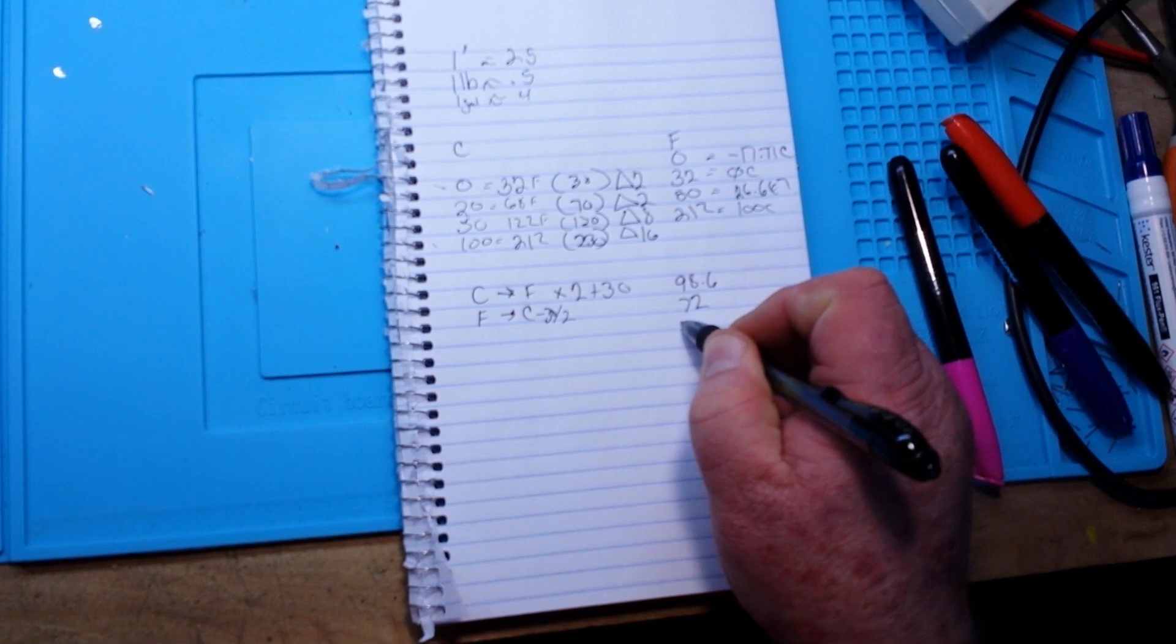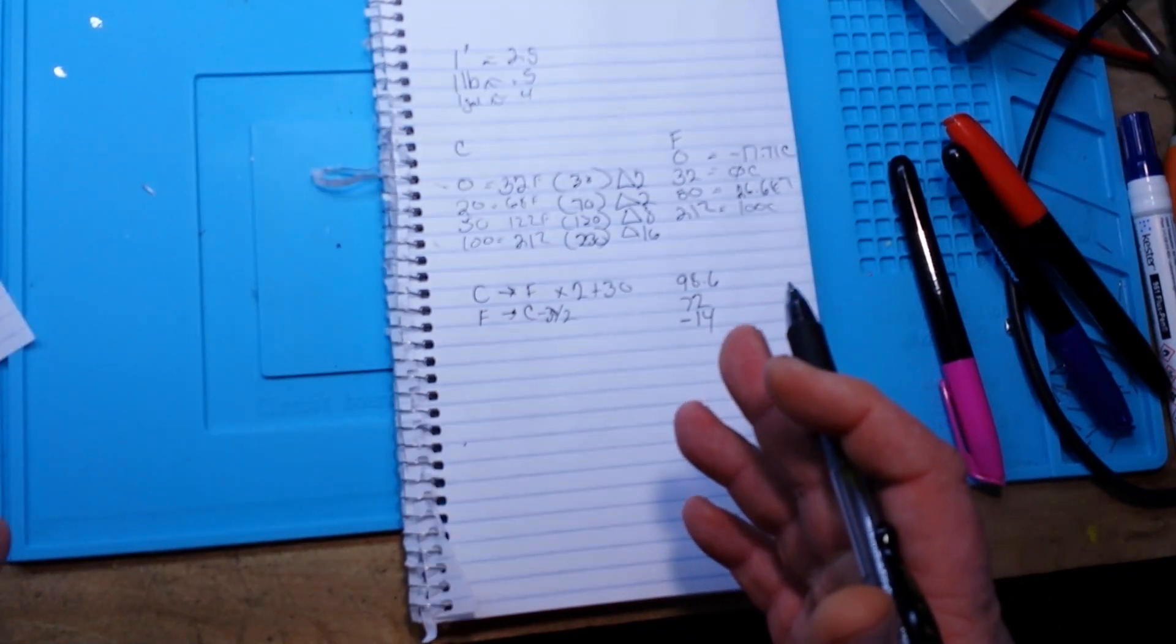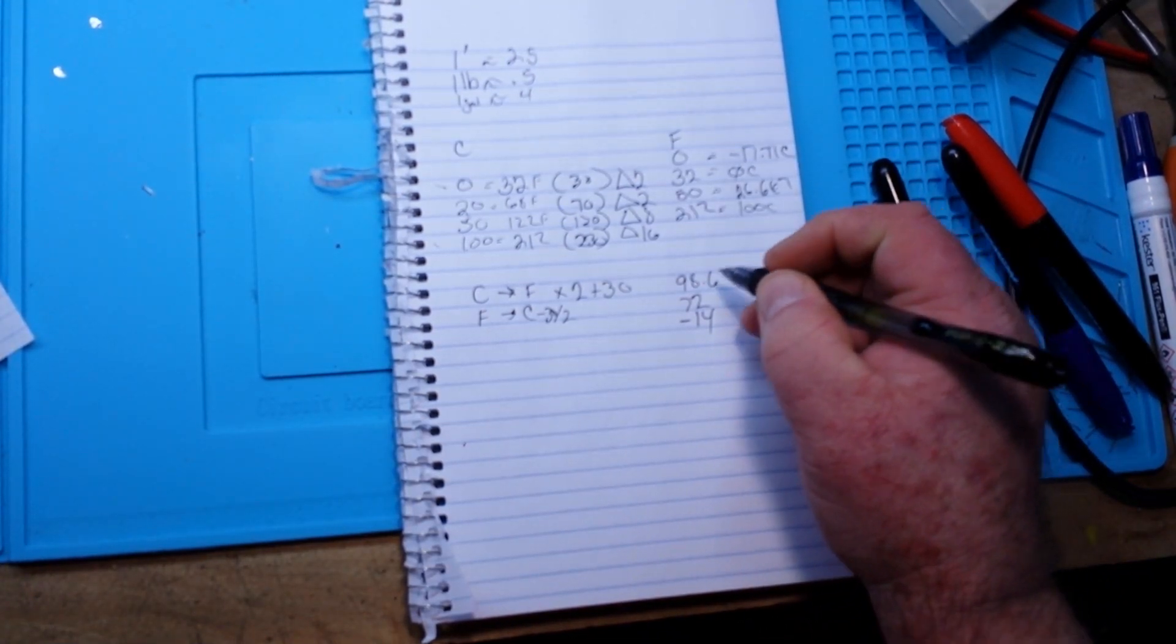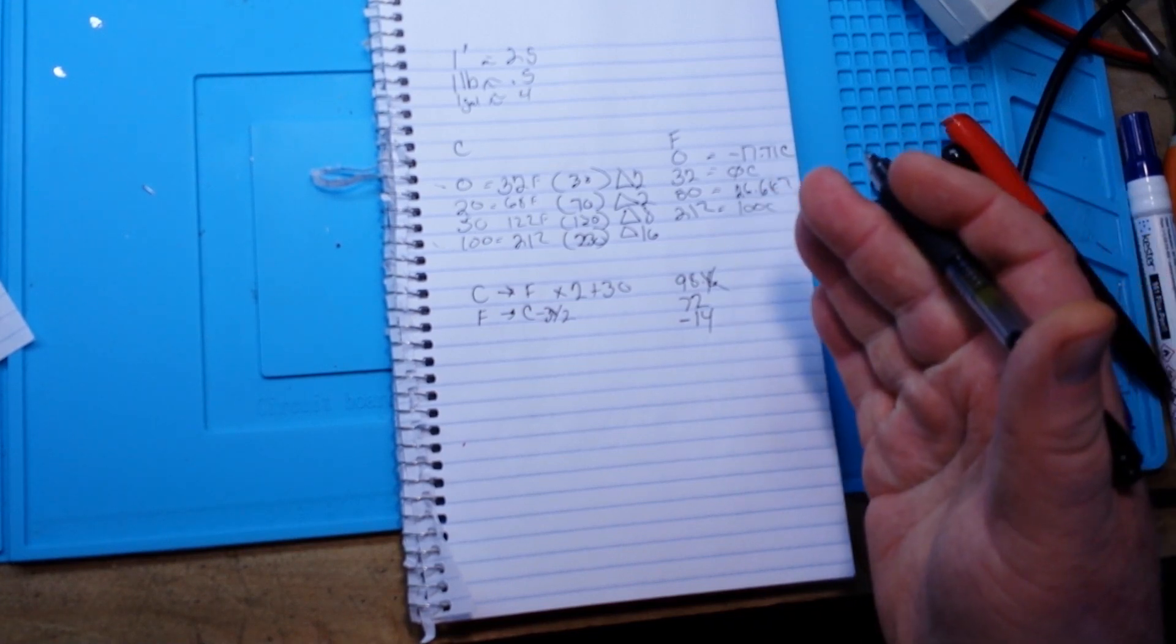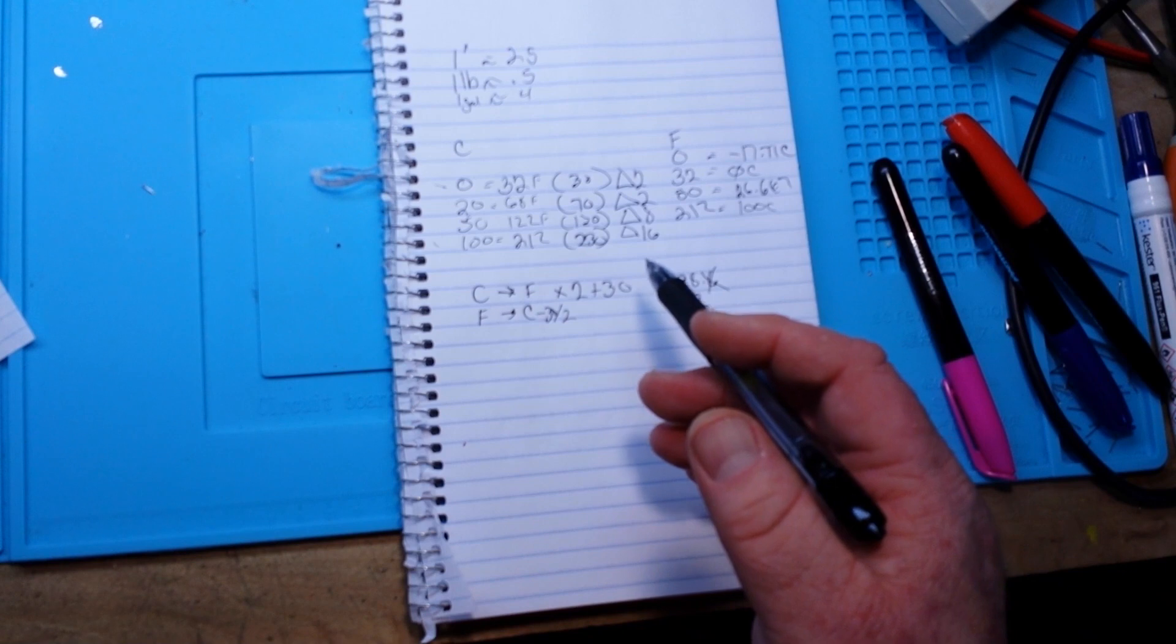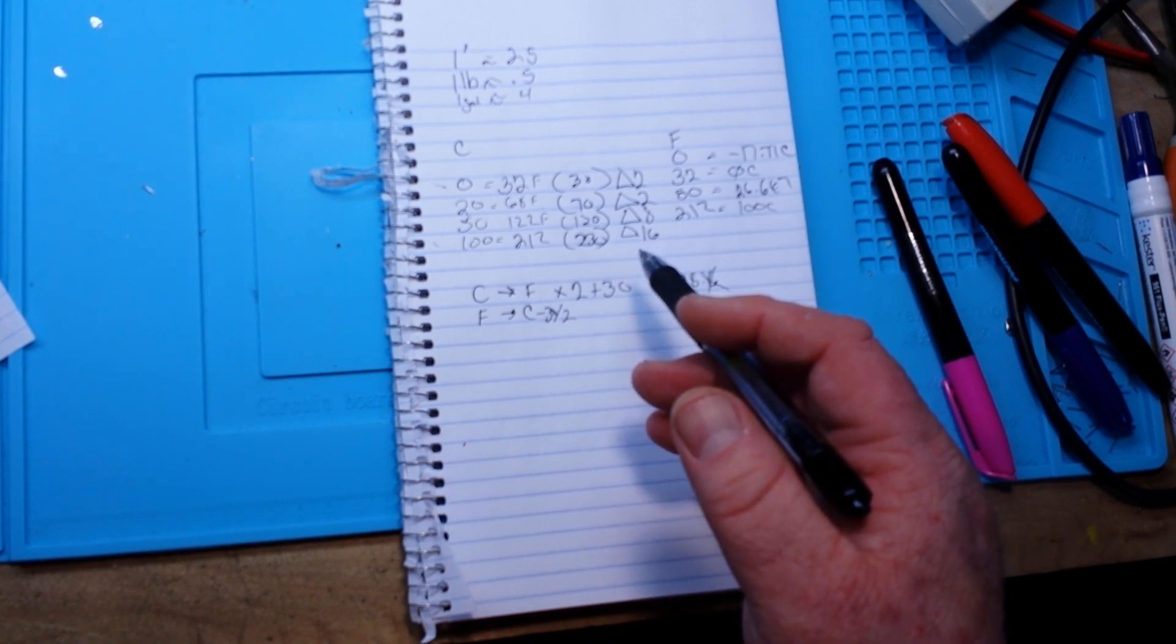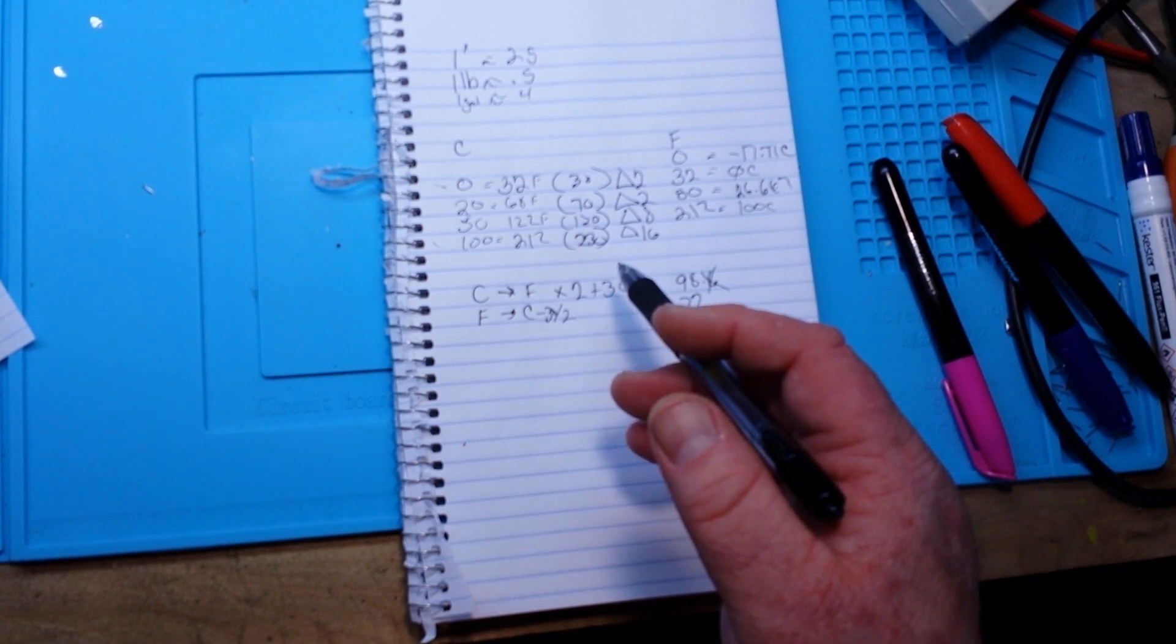Okay should be pretty easy. Let's start with body temperature 98.6, we're going to ignore the 6, just call it 98. Right, minus 30. What's 98 minus 30? My brain doesn't want to work. 98 minus 30 is 68, divide by 2 we get 34 and a half. We'll just call it 34 degrees Celsius.